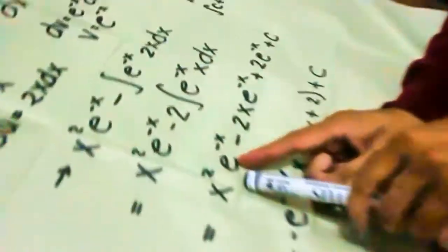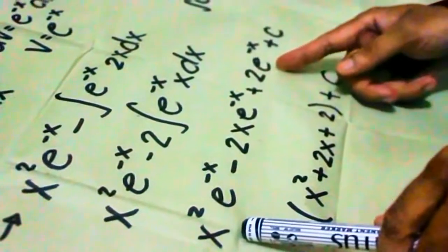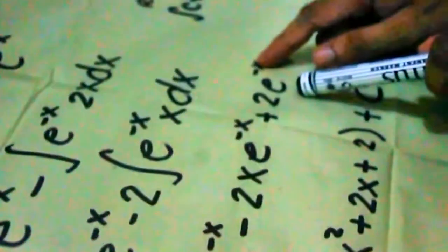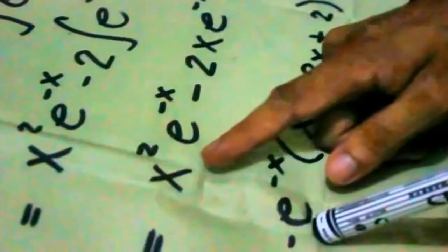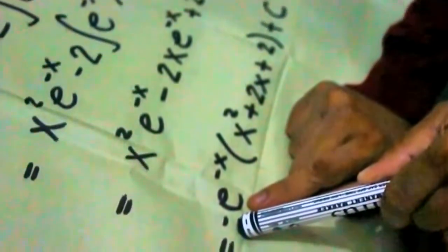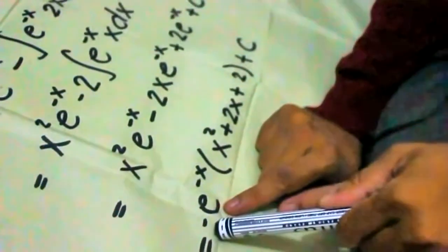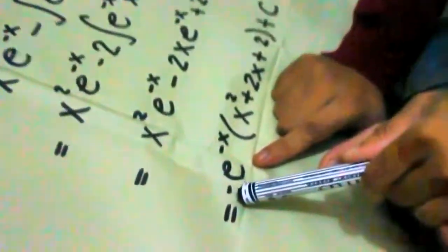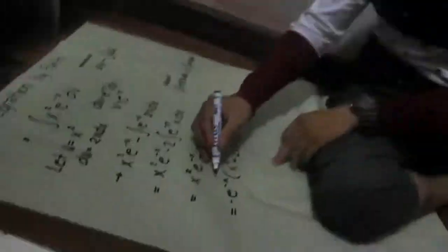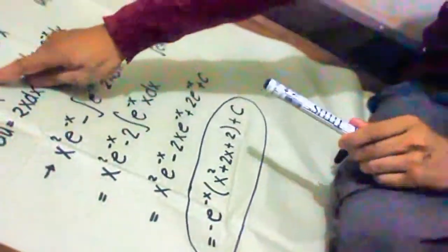We need to rearrange this expression by factoring it out. The common term in every term of this polynomial is e raised to the negative x. We move it out, and to make the expression positive we also move the negative sign outside. So the common factor is negative e raised to negative x, giving us: negative e raised to negative x, times the quantity x squared plus 2x plus 2, plus C. That is the answer for finding the integral of x squared e raised to negative x dx.